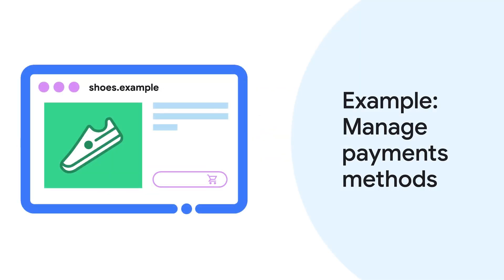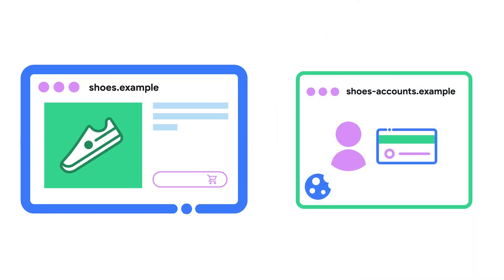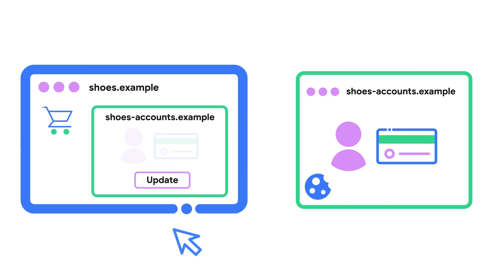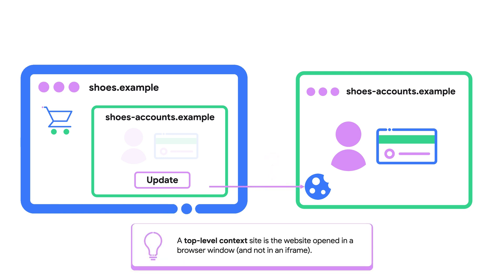Now, another example. Imagine you have an online shoes store, shoes.example. You also have a separate service, shoes.accounts.example, where users manage their accounts and payment details. When the user wants to complete their purchase, they may want to update their preferred payment method. Ideally, you'd let them do that right there within a widget embedded in your checkout page, instead of redirecting them to the top-level shoes.accounts.example site. But when third-party cookies are blocked, the user won't be able to load the embed, as their session cookie is set by top-level shoes.accounts.example and is not available in the embedded context.